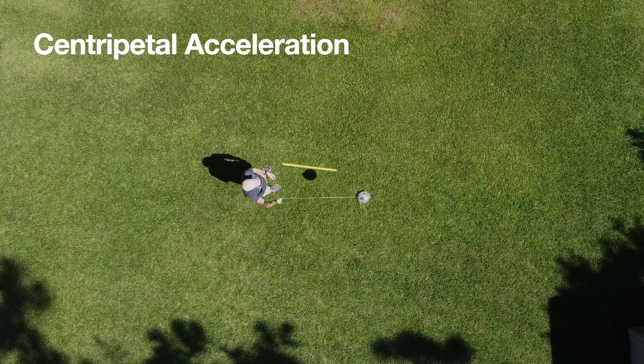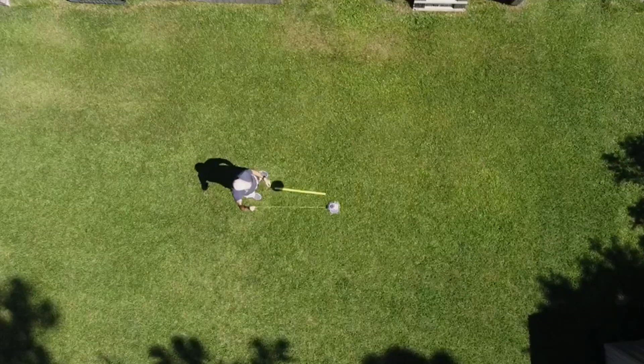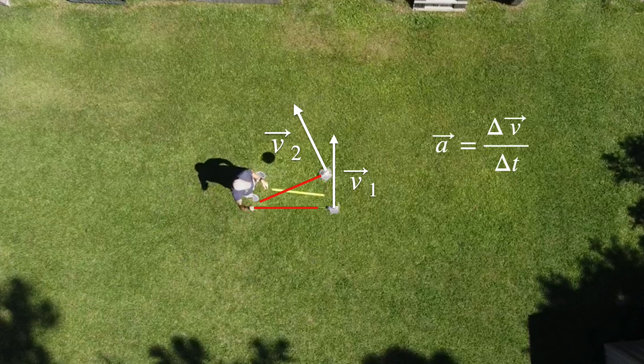First, we need to think about centripetal acceleration. So as this ball moves around in a circle, it accelerates. At this position, it's moving with a velocity in this direction. A short time interval later, it's moving in this direction. Since acceleration is defined as the change in velocity per unit time, then it is accelerating, even if it's a constant speed.